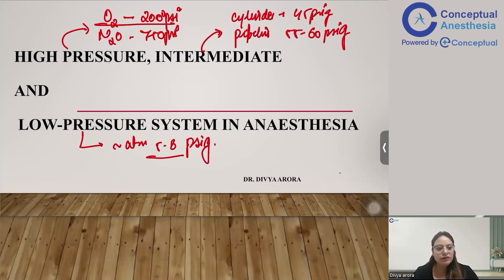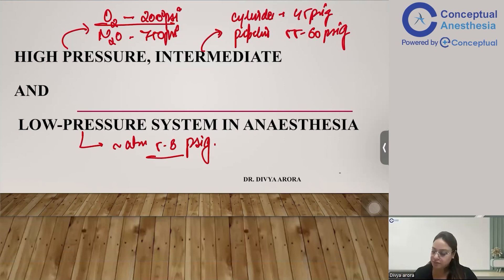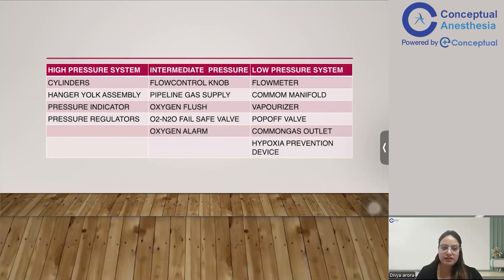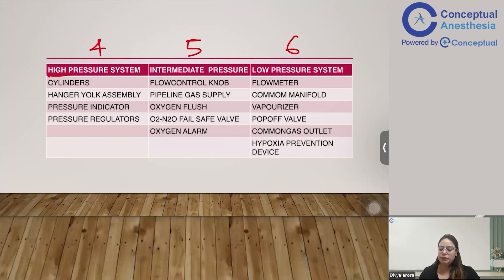Now, what are the components of the high pressure, intermediate, and low pressure systems? This is important from a practical, clinical, and theoretical point of view, as well as for MCQs. To help you memorize: the high pressure system contains four components, the intermediate system contains five, and the low pressure system contains six.